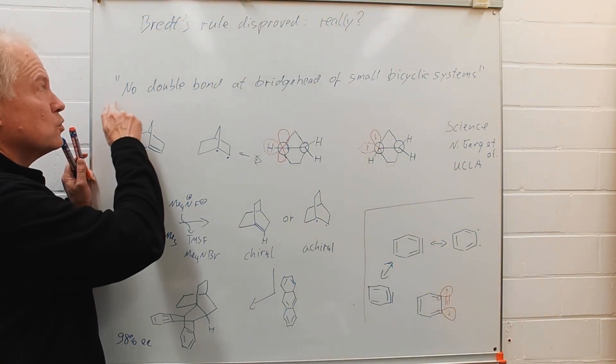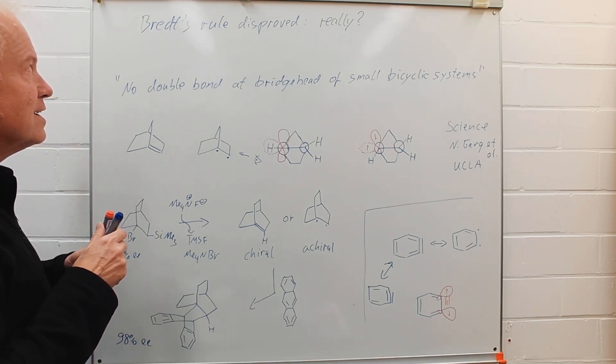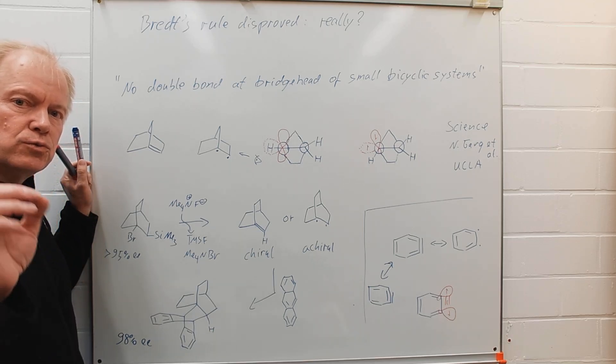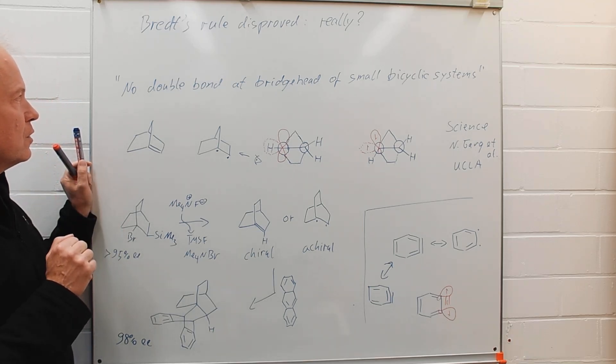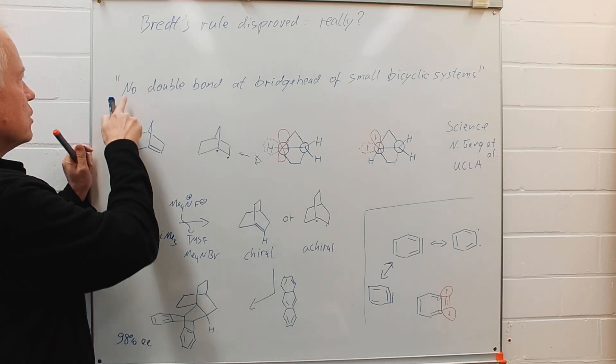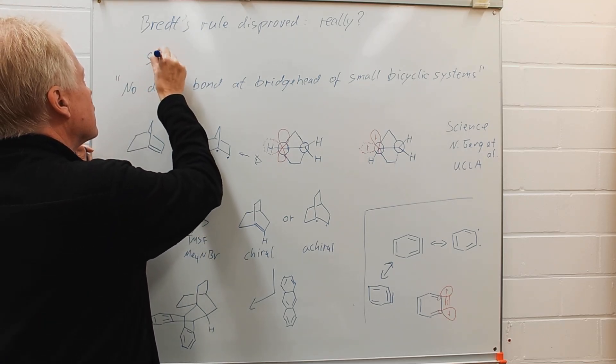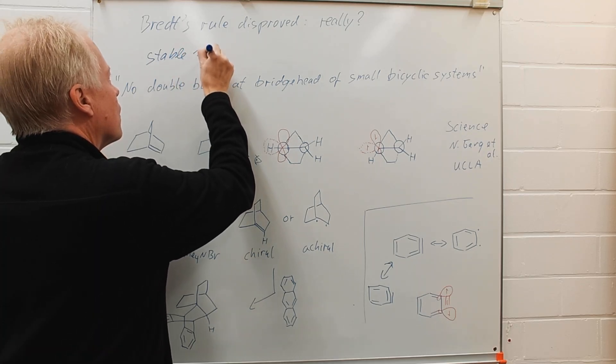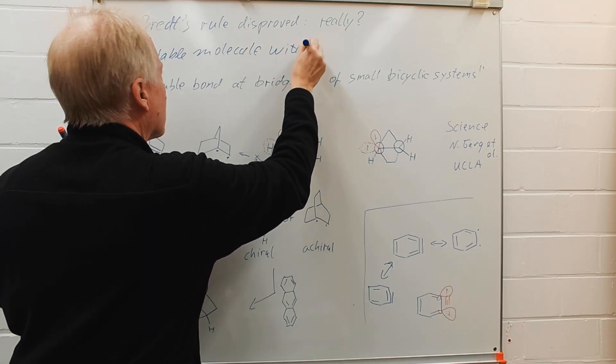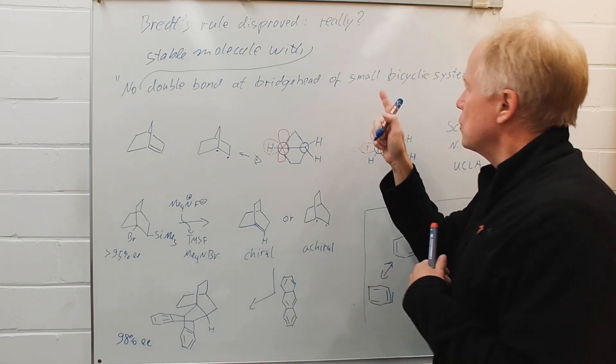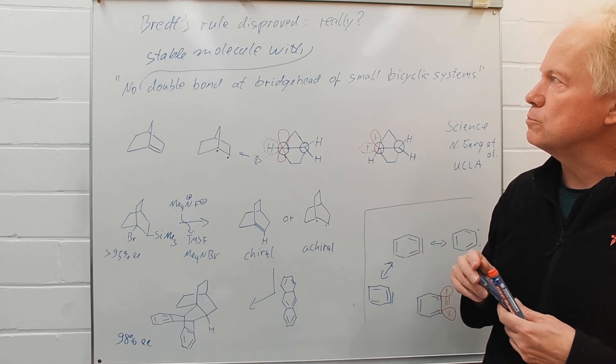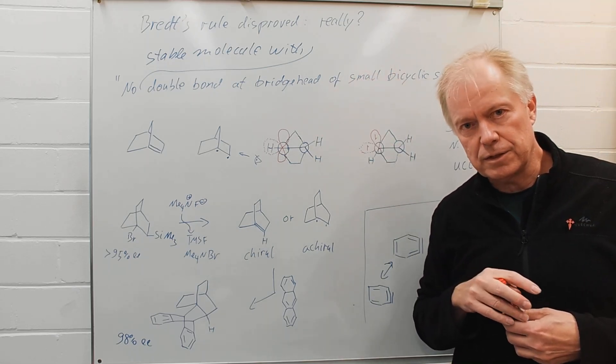So, and also this is of course a highly reactive species. So, let us go back to Bredt's rule. Is Bredt's rule disproved? Well, yes, if you take Bredt's rule literally. But, well, if you make a little abbreviation, just adding no stable molecule with double bond at bridgehead of small bicyclic systems, then you have a modified Bredt rule that still remains valid. Thanks for listening.